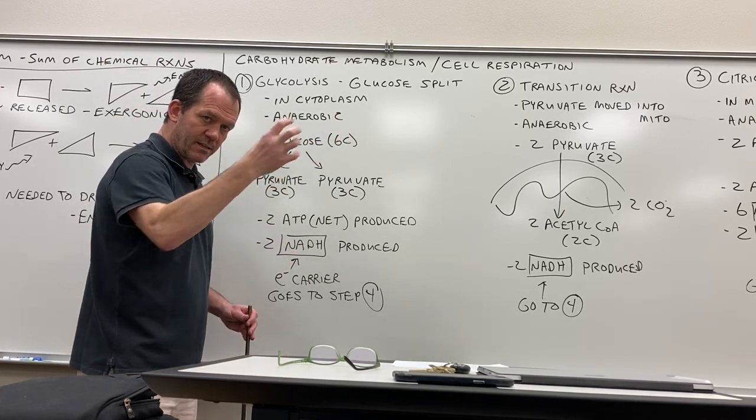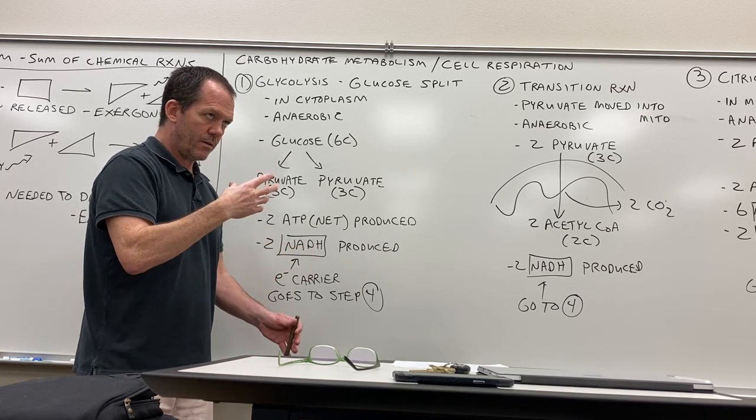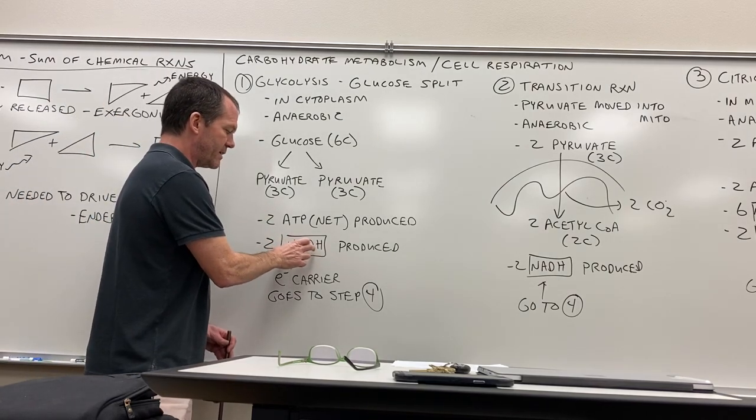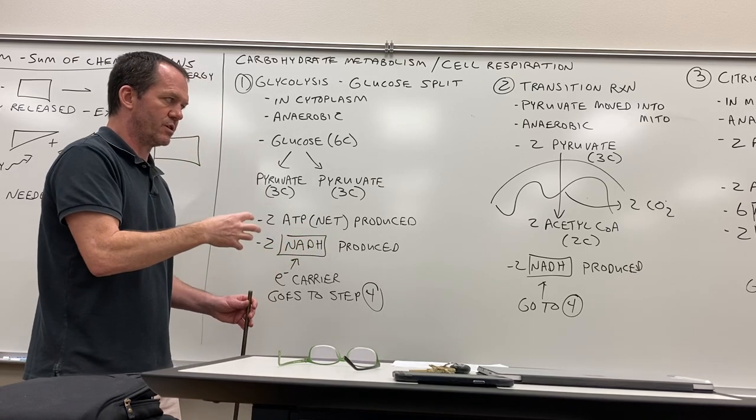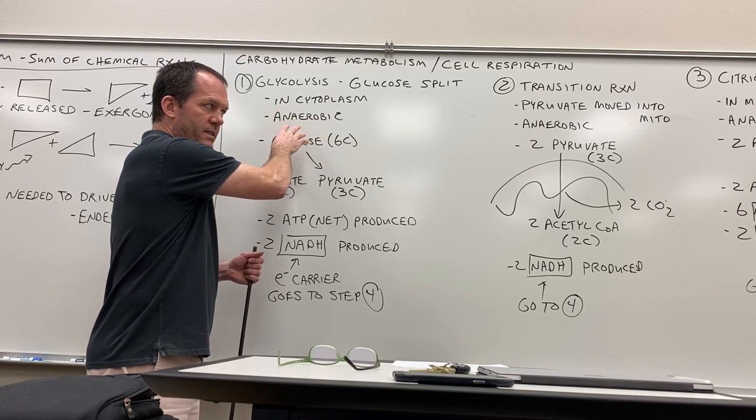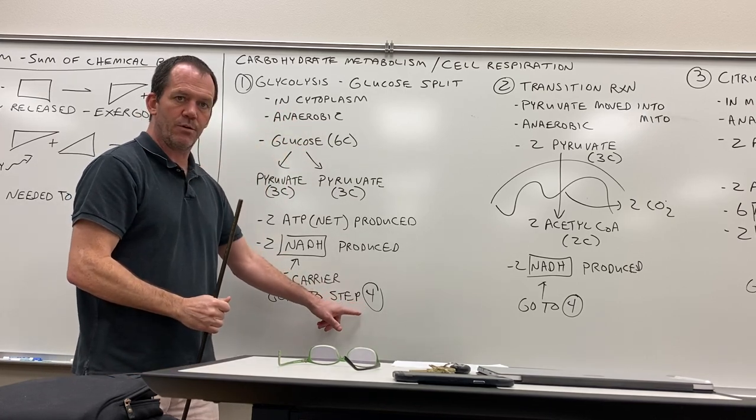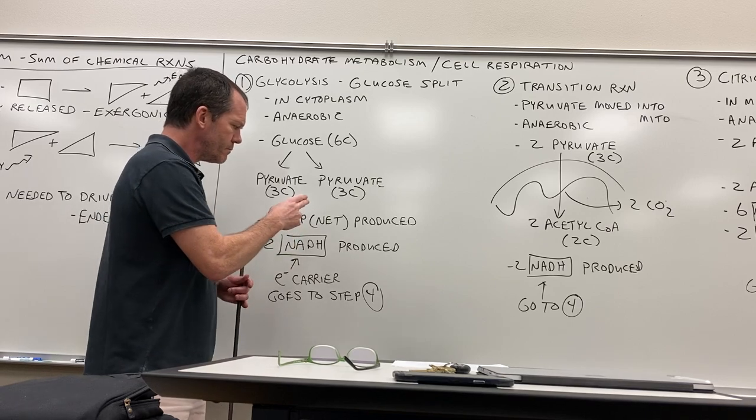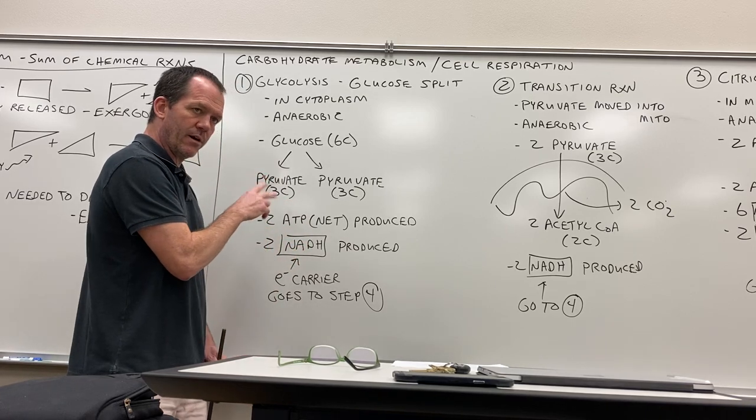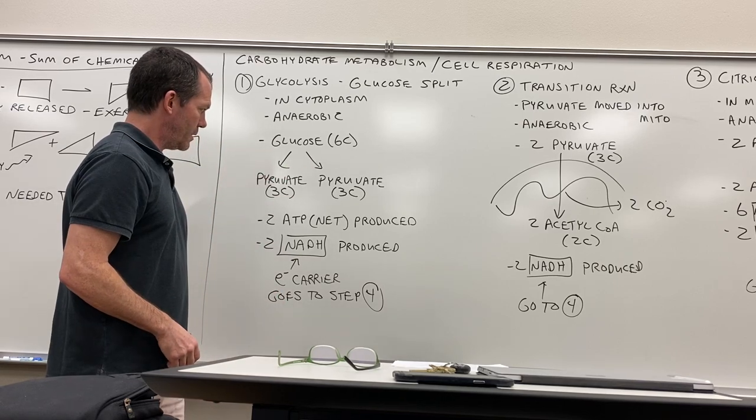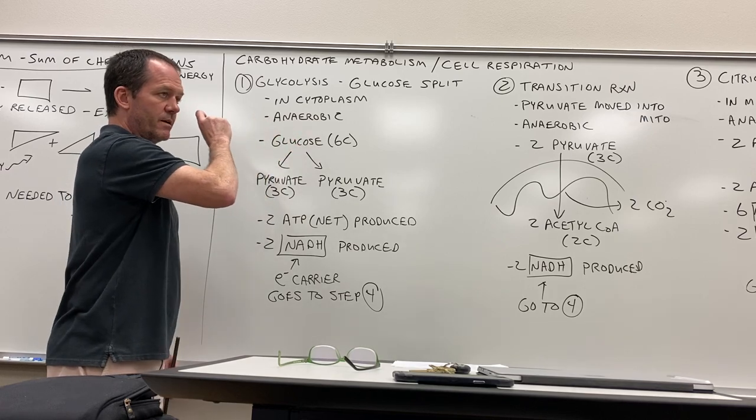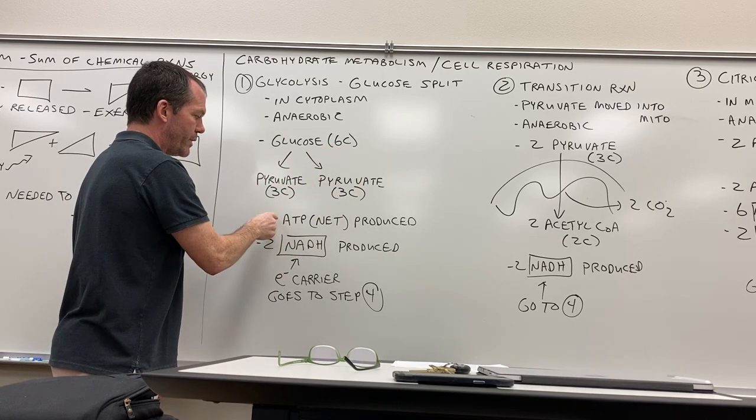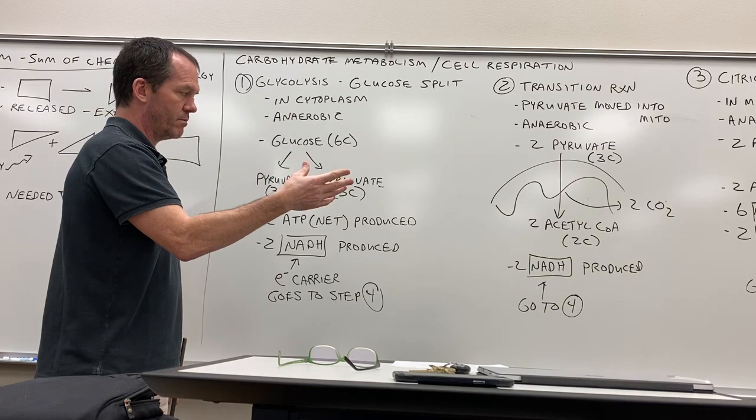We also produce about two NADH. Now NADH is nicotinamide adenine dinucleotide, but this is a molecule that acts as an electron carrier, or maybe a better way to say it is an electron shuttle. Like a shuttle bus—it takes you from the parking lot to the gate and back. NAD+, the not reduced version, this nicotinamide molecule acts as an electron carrier. It's going to grab electrons here in glycolysis and take them to step four, the last reaction set, which is electron transport. Whenever we see these guys made, keep track of them, two here, and we'll deal with them later.